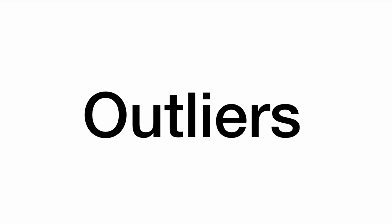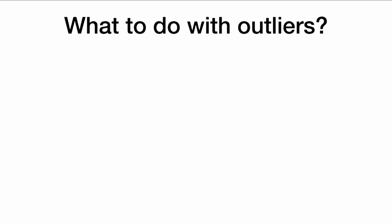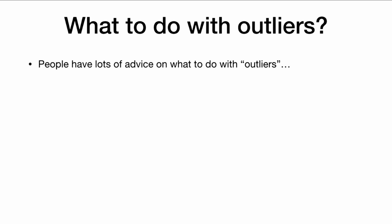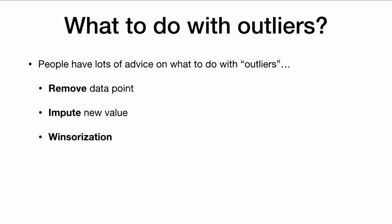Let's talk about outliers. What do we do with outliers? People have lots of advice on what to do with so-called outliers: remove the data points, impute new values, Windsorization, using robust analysis methods. We'll talk about all of these.